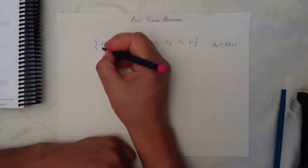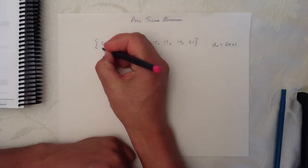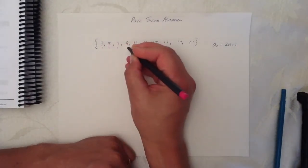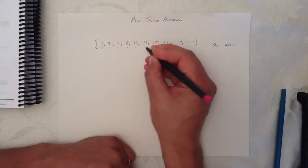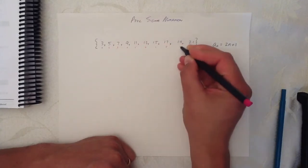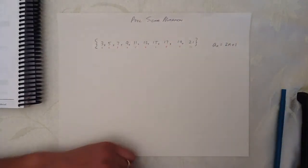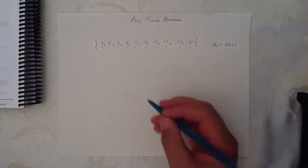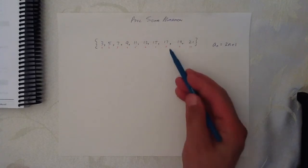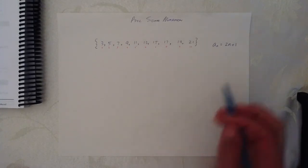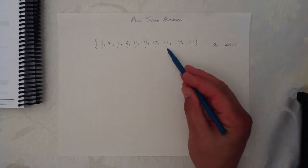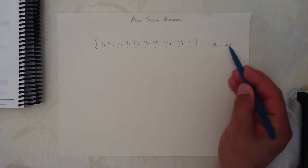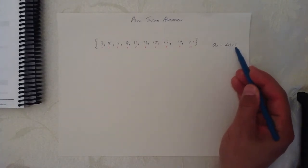So we have a1, a2, a3, a4, a5, a6, a7, a8, a9, and a10 — there are 10 terms in this sequence. a5 is 11, and a8 is 17, because a8 = 2 times 8 plus 1, which is 17.